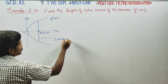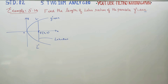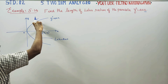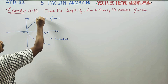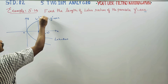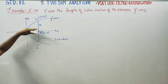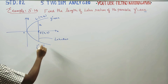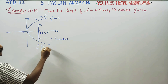In the latus rectum, the length is from L to L'. The latus rectum has a y-value of y1, and by symmetry the other endpoint has y-value of minus y1.